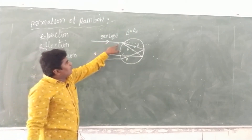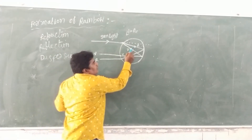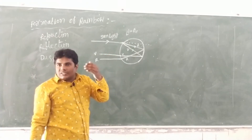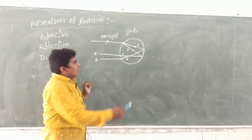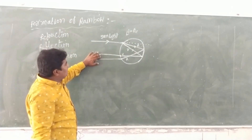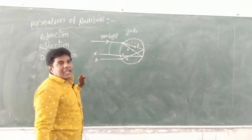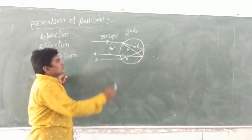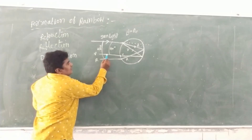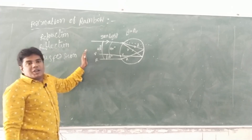The first step is refraction. The colorless light enters, and at the inner surface of the water drop, when the critical angle is exceeded, total internal reflection takes place. The reflected light then exits the water drop with its colors. The red color exits at 42 degrees, and violet exits at approximately 40 degrees — a difference of about 2 degrees.